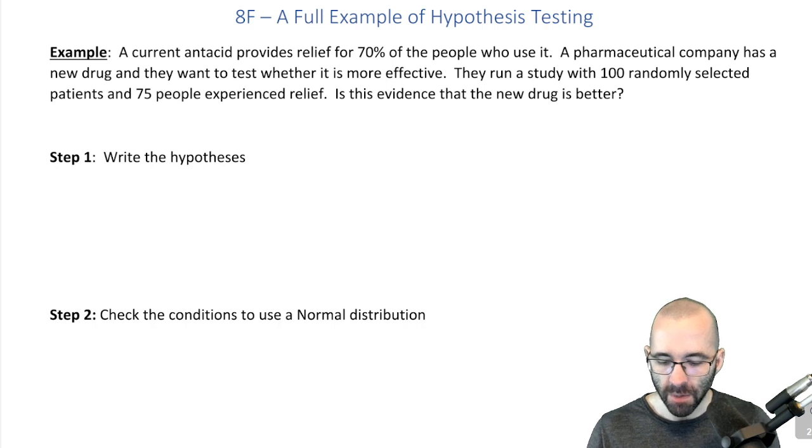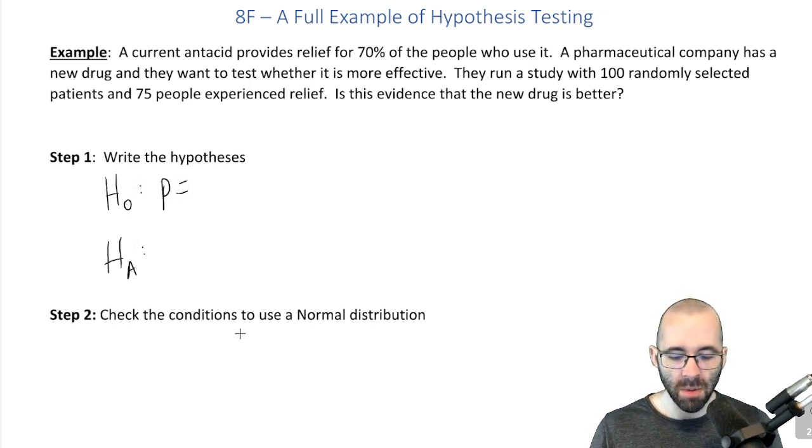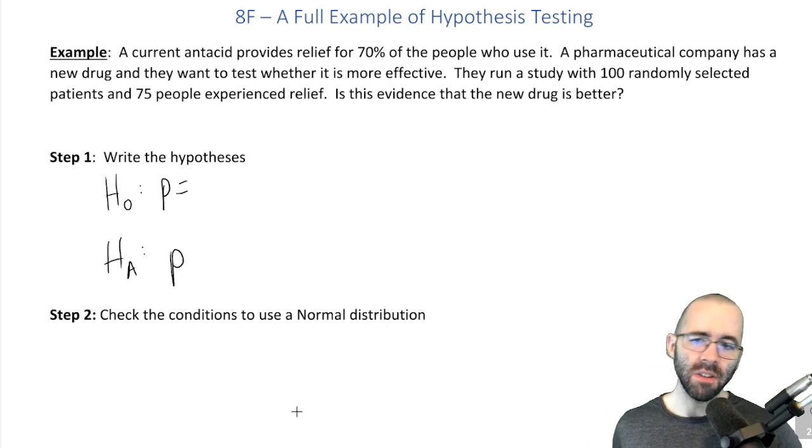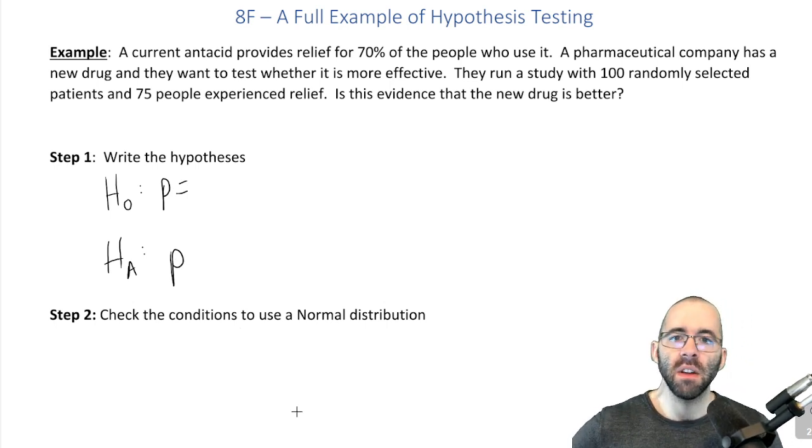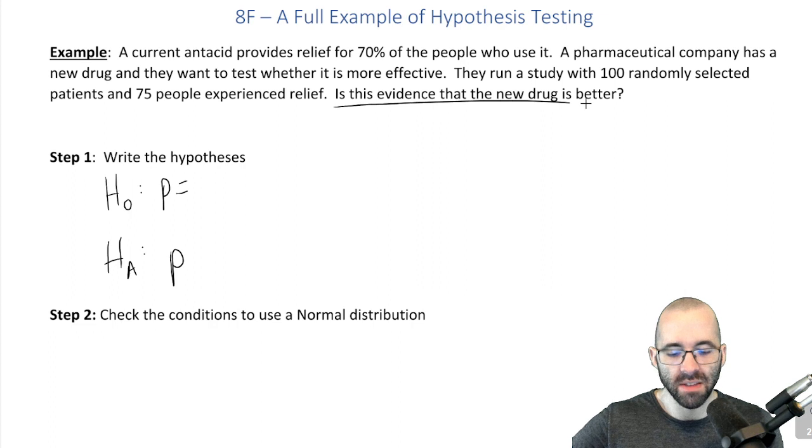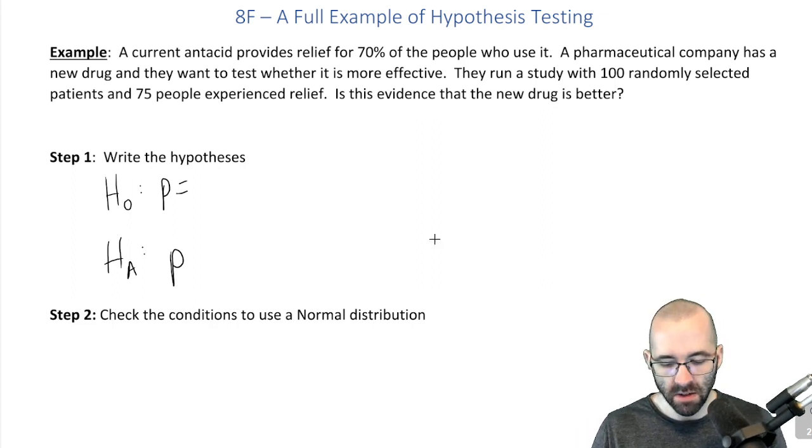So our hypotheses: we'll start with our null and our alternative. We know the null will always look like p equals some number. The alternative has more possibilities. What are we trying to find evidence of? What we're trying to test is our alternative hypothesis. We're looking for evidence that the new drug is better. That's our alternative hypothesis.